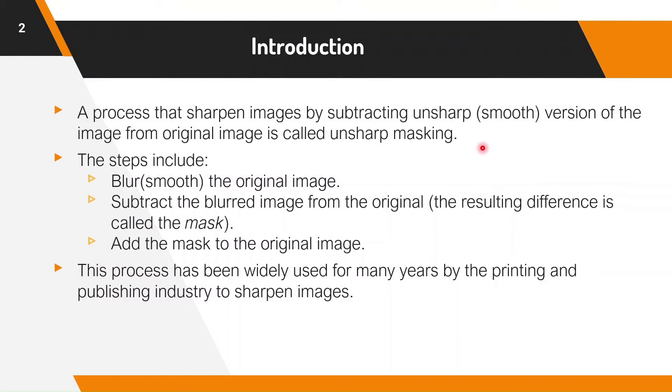Unsharp masking is a process of sharpening images by subtracting a smoothed version of the image from the original image and again adding it to the original image.